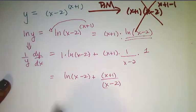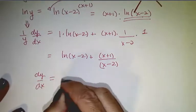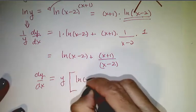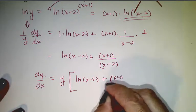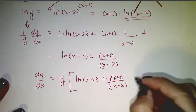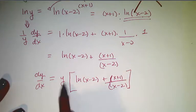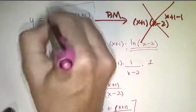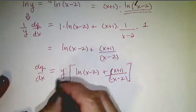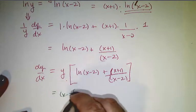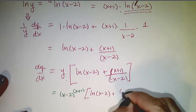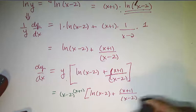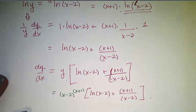Now we multiply both sides by y and get dy/dx, which is what we're looking for, equal to y times ln(x-2) plus (x+1) over (x-2). Our last step is to replace y with the original expression. So dy/dx equals (x-2) to the (x+1) times ln(x-2) plus (x+1) over (x-2).